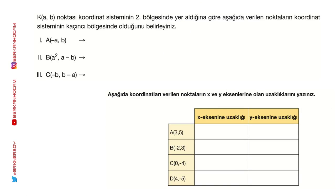K noktası (A,B) ile ifade edilmiş ve ikinci bölgesinde yer alıyor, yani A negatif, B pozitif. Eksi A ifadesi negatif bir sayı eksi ile çarpıldığında pozitife döner, B zaten pozitifti; bu birinci bölgede. A kare ifadesi negatif bir sayının karesi pozitif olur. Pozitif bir sayıdan pozitif çıkartıldığında sonuç negatif olabilir; örneğin eksi 1'den 2 çıkartınca eksi 3 kalır. Artı virgül eksi ifadesi dördüncü bölgede.